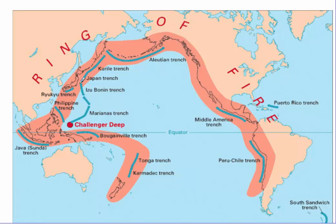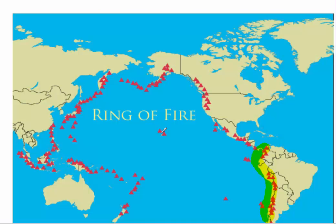The Ring of Fire is the area of subduction zones that surrounds the Pacific Ocean — a series of subduction zones where oceanic plates slip underneath continental plates or other oceanic plates. You can see the large number of volcanoes that occur all around this Ring of Fire.